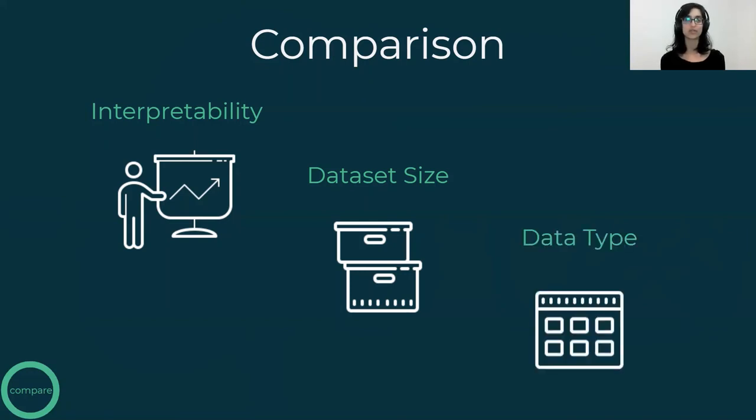And lastly, to make sure you don't think tree-based models are perfect, they only work on tabular data, and not on other data types. So you can't use it for raw data, like image, text, or audio.